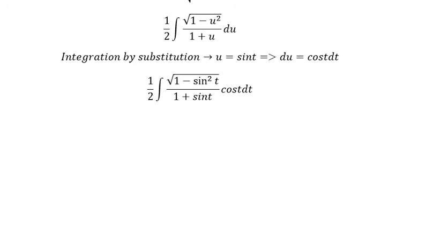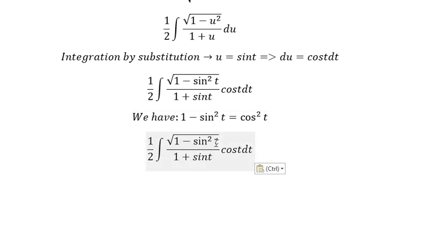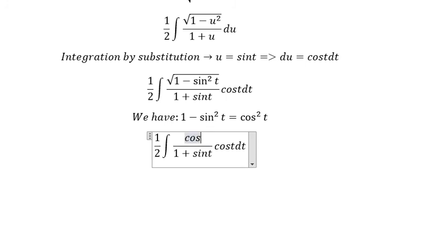Next we have the formula: 1 minus sin² t equal to cos² t. So we put this one in here. We know that the square root of cos² t you get cos t. cos t multiply with cos t you get cos² t.